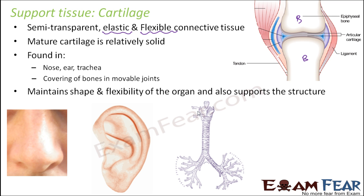These are some of the places where cartilage is found — it is softer and more flexible when compared to bone. Looking at the functions of bone and cartilage, you understand why they are called support tissue: bone forms the entire framework of the body giving basic support, while cartilage protects the bones and provides flexibility that bone cannot. Both act as support connective tissue.